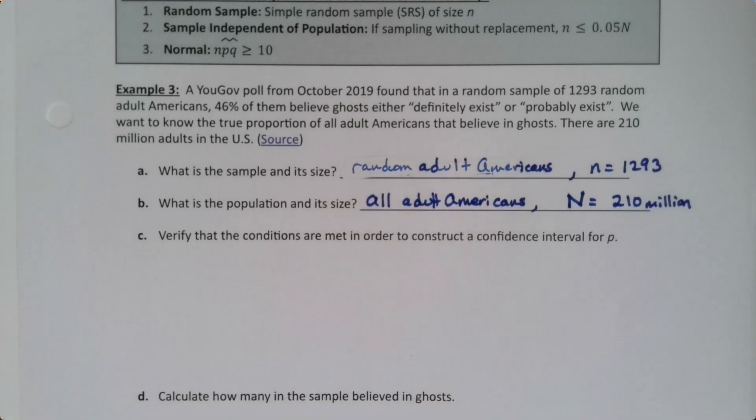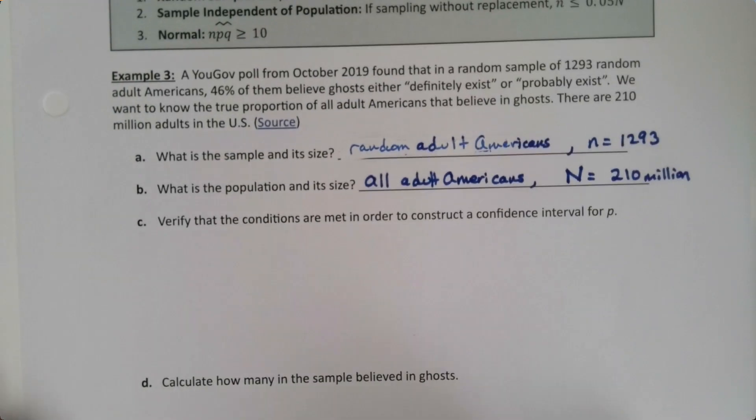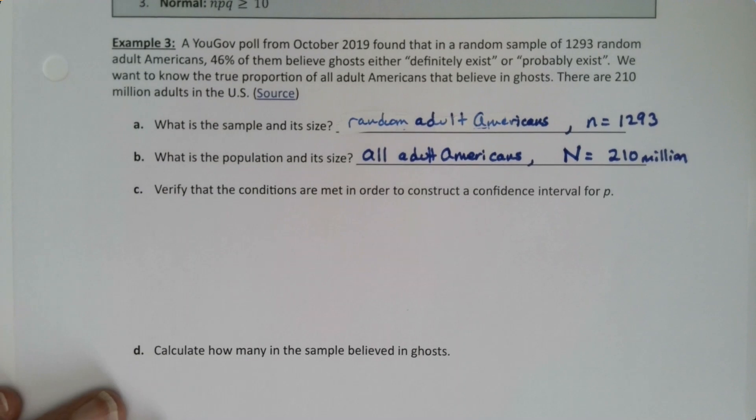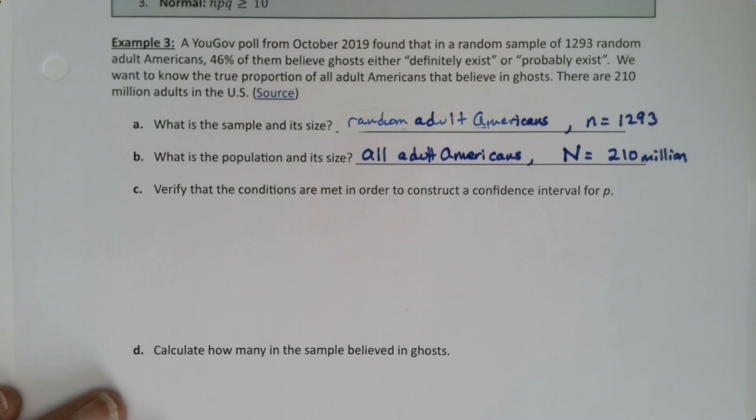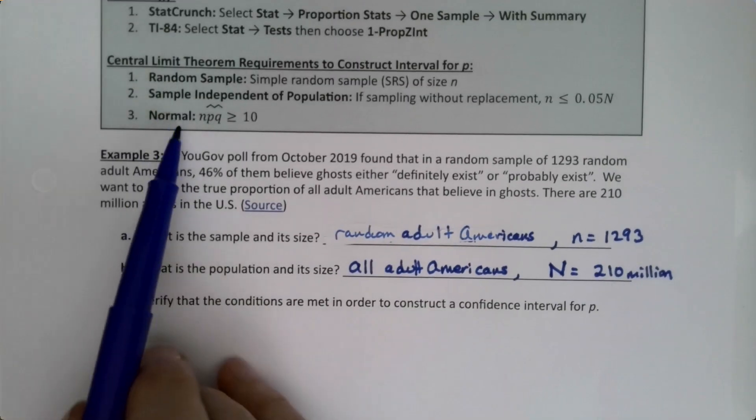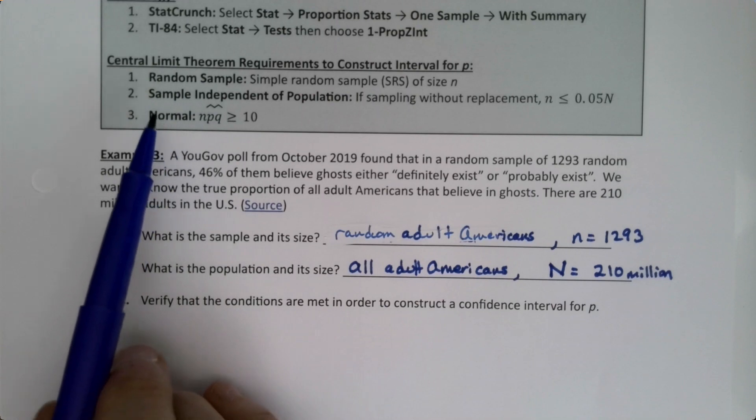Now we're going to verify the conditions are met in order to construct a confidence interval for p. We're only doing this because it asks us to; we don't do this unless it's asked for.